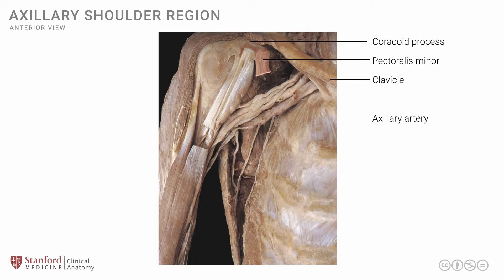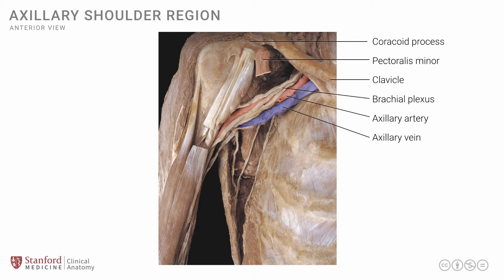We do see some neurovascular structures in this region that are traveling from the root of the neck area through the axilla and into the arm. The first one of these structures is the axillary artery, which is seen here, highlighted in red. Just anterior to it, we see another structure, which is the axillary vein, highlighted in blue. You can see clearly there are many nerve-like structures; in fact, they are part of the brachial plexus. It is difficult to identify exactly which part of the brachial plexus these elements are from, so we'll just call them brachial plexus collectively.